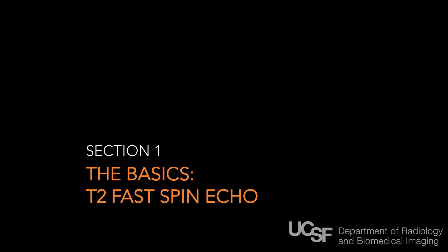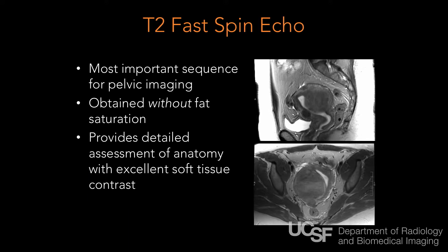First, I want to start with the basics: the T2 fast spin echo. The fast spin echo is really the cornerstone of what we do. Almost everything you can see and judge in the female pelvis comes from these pulse sequences because they're high anatomic resolution, and a lot of the questions we ask in pelvis imaging are anatomic questions. Importantly, T2s should be obtained without fat saturation, as fat saturation causes a lot of confusion.